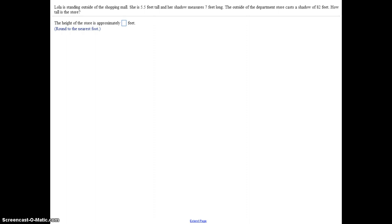Last problem. It says Lola is standing outside the shopping mall and she is 5.5 feet tall and her shadow measures 7 feet. So they are going to compare height to shadow. Lola is one of the things being compared, and also a department store. So Lola is 5.5 feet and her shadow is 7 feet. The department store is casting a shadow of 82 feet.